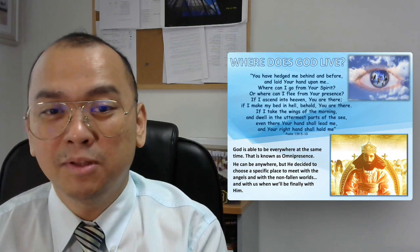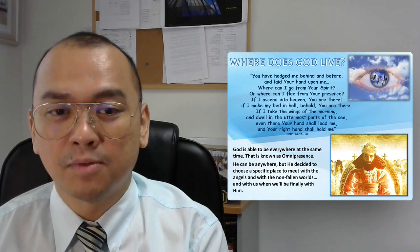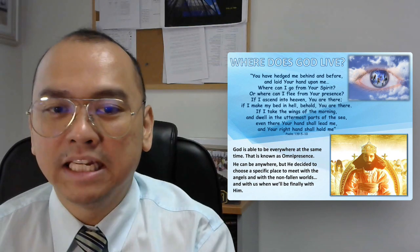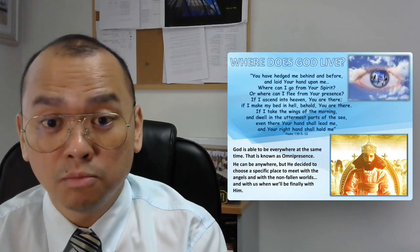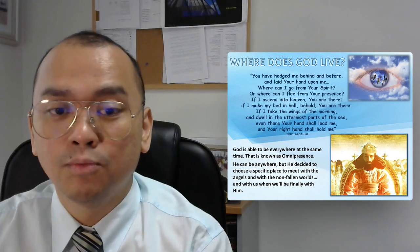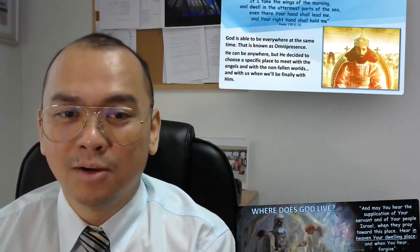So God is able to be everywhere at the same time and that is known as omnipresence. He can be anywhere, but He decided to choose a specific place to meet with the angels and with the unfallen world and with us when we'll finally be with Him.